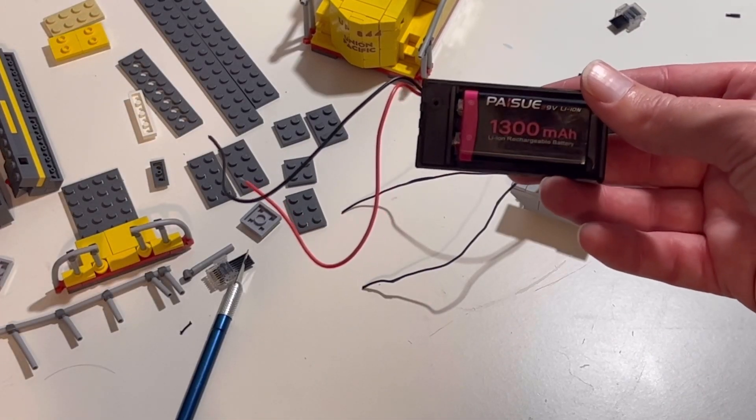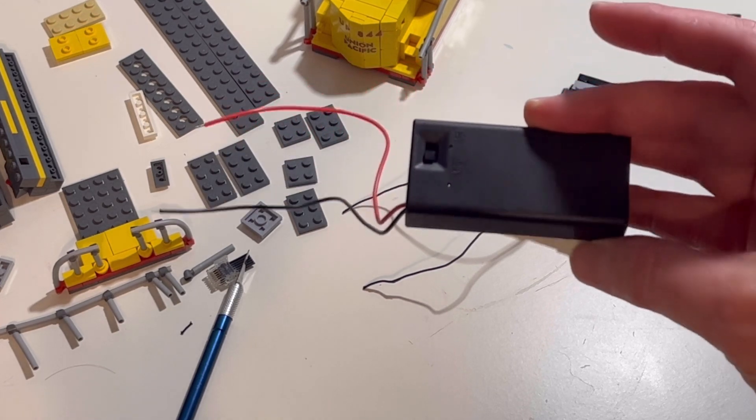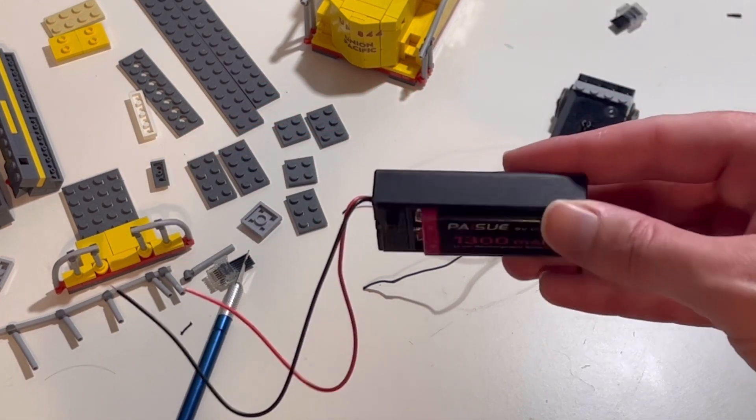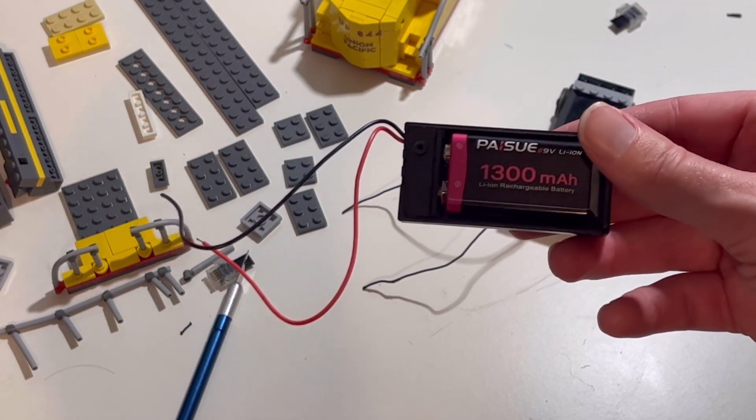The one part that wasn't in the box there is this 9-volt battery box. I just bought it off Amazon, as well as a lithium-ion rechargeable 9-volt battery. That's going to be the power supply.